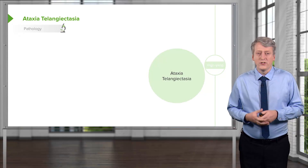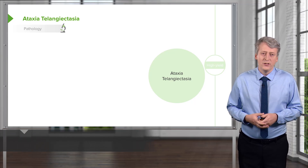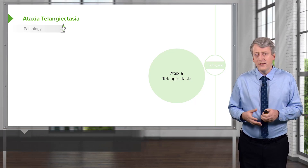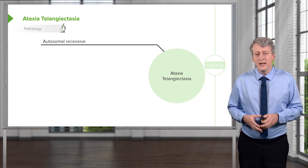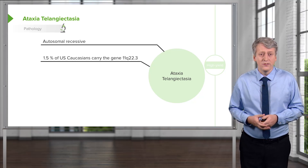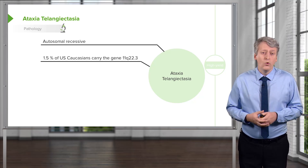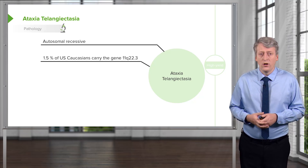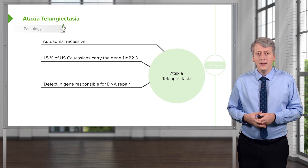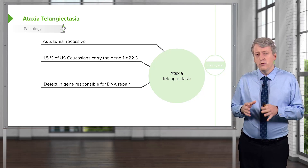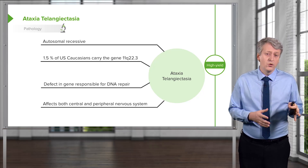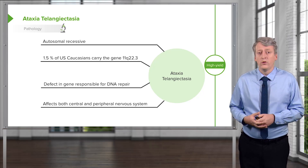One of the conditions that can cause ataxia in children is ataxia telangiectasia. It is an autosomal recessive disease. The gene is carried in 1.5% of US Caucasians and it's on 11q22.3. It's a defect in the gene responsible for DNA repair, and it affects both central and peripheral nervous systems.